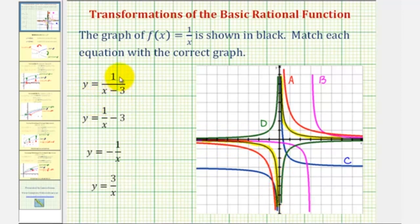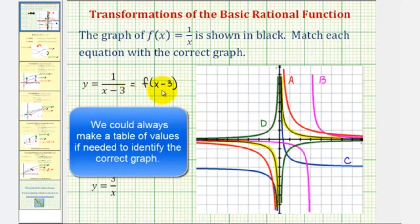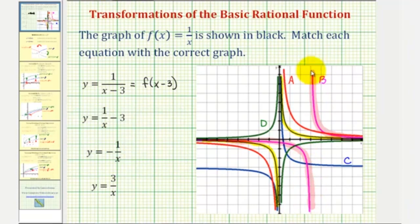The first equation given is y equals one divided by the quantity x minus three, which is equivalent to f of the quantity x minus three. It takes an x value of three to get an input of zero into this function, and therefore this shifts the graph three units to the right. This equation would produce graph b, which is f of x shifted three units to the right.